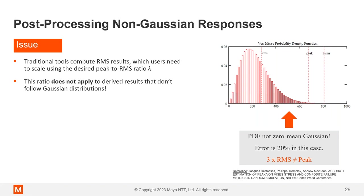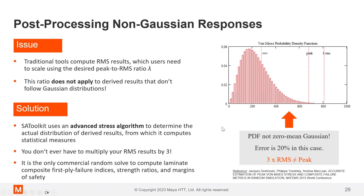The solution for that SATK uses, we have an advanced stress algorithm. So it actually determines the actual distribution of the derived results. So just like this, it's not assuming it to be zero mean Gaussian. So you don't ever have to just take your RMS and multiply by three. If you say you want to have a three sigma response, it will actually solve this peak for you.